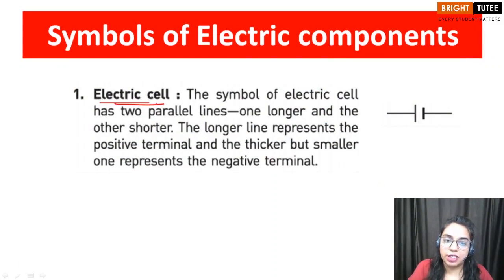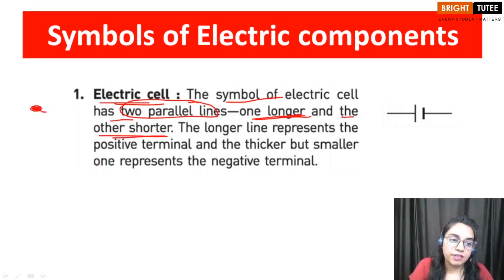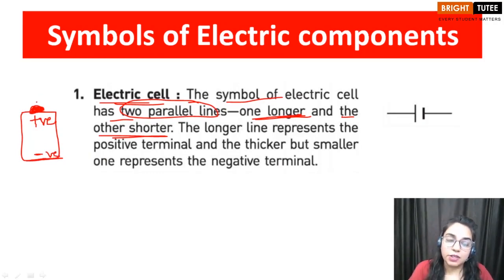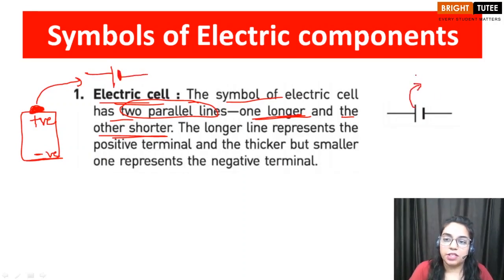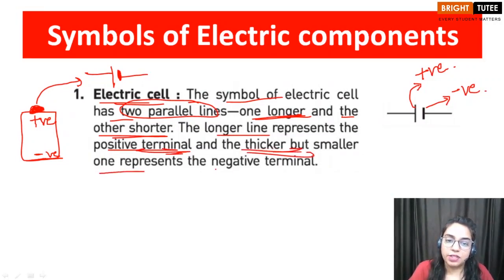The symbol of an electric cell has two parallel lines. Recall how we identify the positive and negative terminal of the cell — the terminal with a metal cap represents the positive terminal, whereas the flat disc side represents the negative terminal. In the symbol, the longer line represents the positive terminal, and the thicker but shorter line represents the negative terminal.